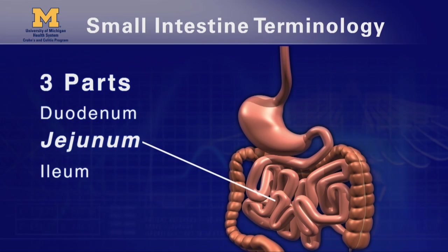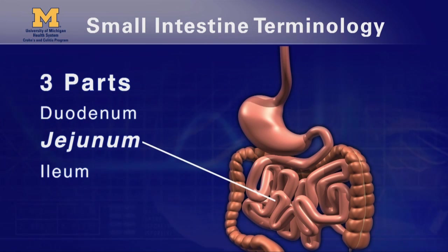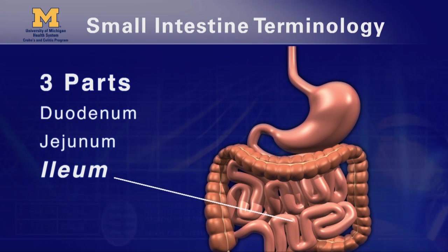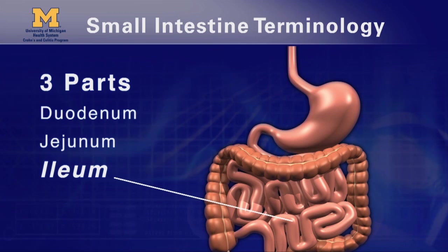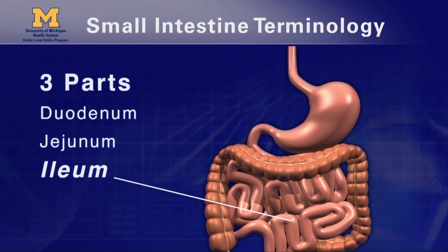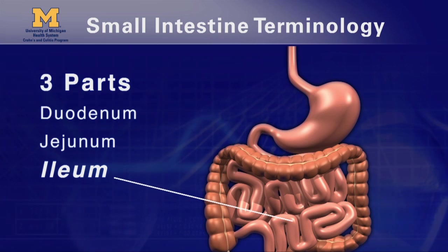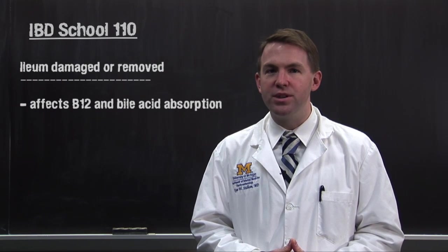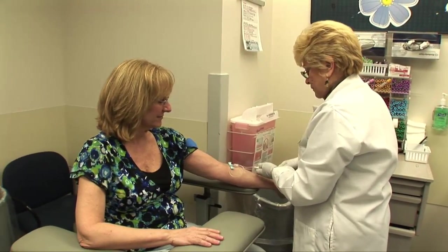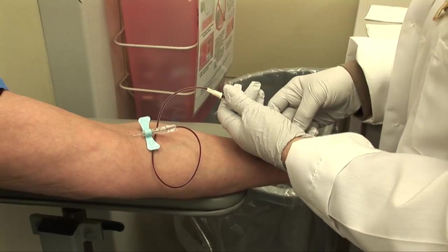The second part of the small intestine is roughly 6 feet long and called the jejunum. It's here where the majority of nutrients are absorbed into the body. The last and longest part of the small intestine is the ileum, about 13 feet long. Here in the ileum, the body absorbs vitamin B12 and most of your bile acids, which are sent back to the liver and gallbladder to be recycled for another round of fat digestion. If part of the ileum is damaged or removed surgically, it can affect the absorption of B12 and bile acids.